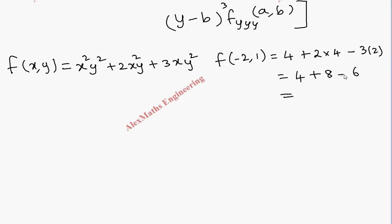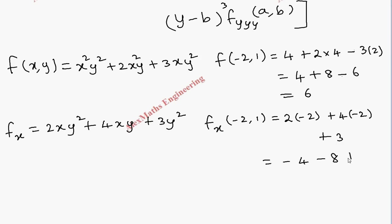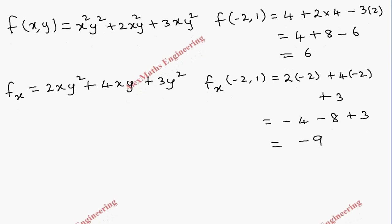Next, fx = 2xy² + 4xy + 3y². Evaluating at (-2, 1): 2(-2)(1)² + 4(-2)(1) + 3(1)² = -4 - 8 + 3 = -9. So fx(-2, 1) = -9.